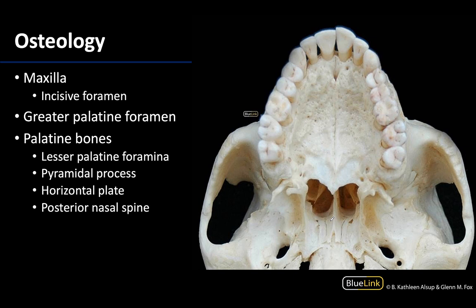We are looking at an inferior view with a focus on the hard palate region. When discussing the hard palate, it seems logical to think the palatine bones would make up the majority, but it's actually the maxillary bones that form the majority of the anterior part. In its most anterior portion, between and posterior to your central incisors, is the incisive foramen — the foramen through which the nasopalatine nerve traverses, providing afferent innervation to the anterior portions of the hard palate.